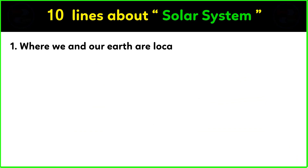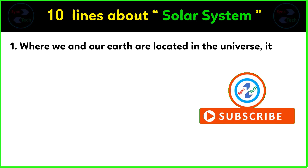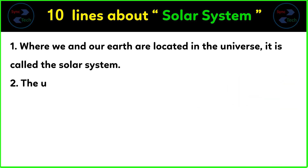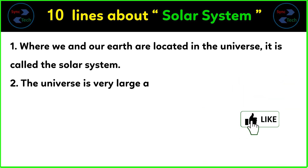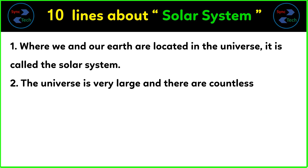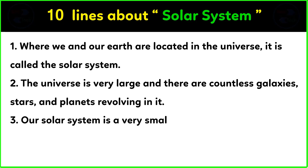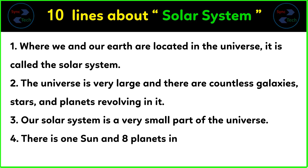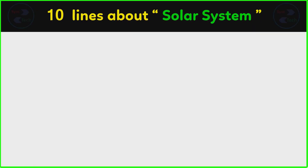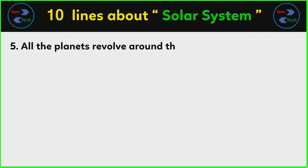Where we and our Earth are located in the universe is called the solar system. The universe is very large and there are countless galaxies, stars, and planets revolving in it. Our solar system is a very small part of the universe. There is one Sun and eight planets in our solar system, and all the planets revolve around the Sun.